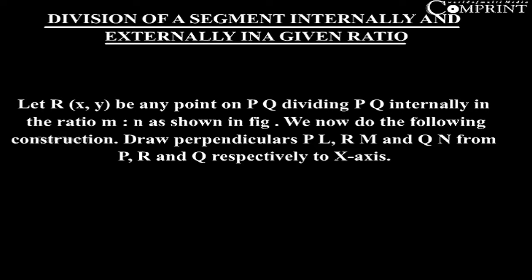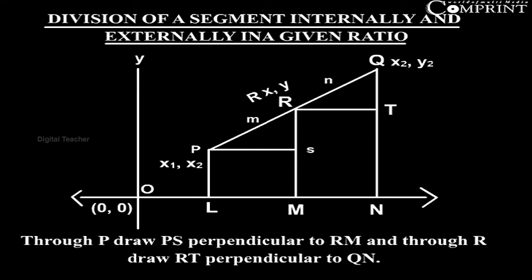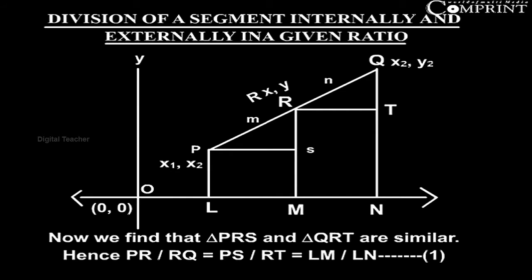Draw perpendiculars PL, RM and QN from P, R and Q respectively to X-axis. Through P draw PS perpendicular to RM and through R draw RT perpendicular to QN. Now we find that triangle PRS and triangle QRT are similar.